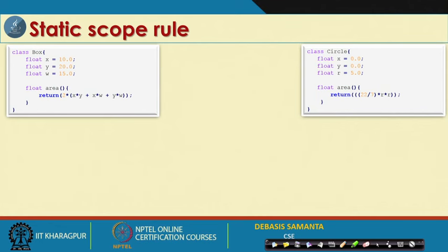If we consider the two classes Box and Circle, we can see that X and Y are declared as float in both classes. But the X and Y defined in Box have scope only within the Box class. Similarly, the X and Y defined in class Circle have scope only within class Circle.